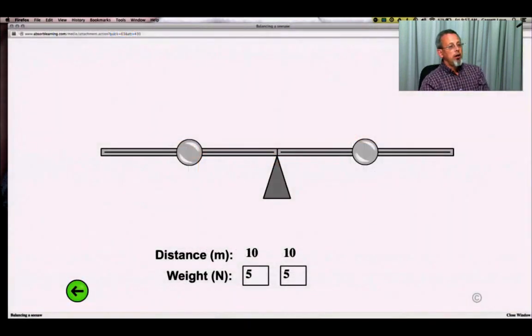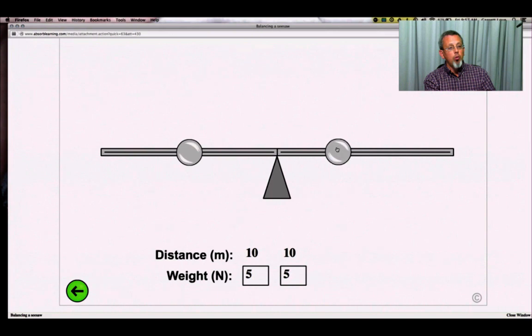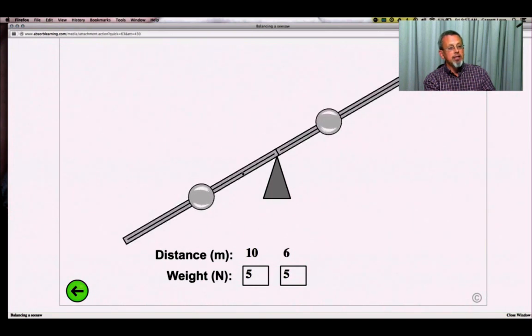We start here with 5 newtons of weight on either side of the seesaw, and notice I can balance the seesaw in more than one way. I can have them both at the same distance, but I could take one of these weights and move it into 6.